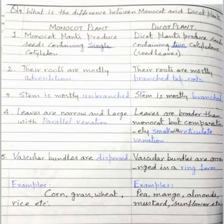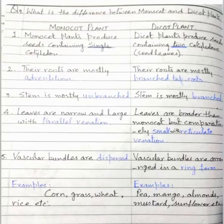Write the heading 'example' in monocot, and write: corn, grass, wheat, rice, etc. The examples of dicot are: pea, mango, almonds, mustard, sunflower, etc.